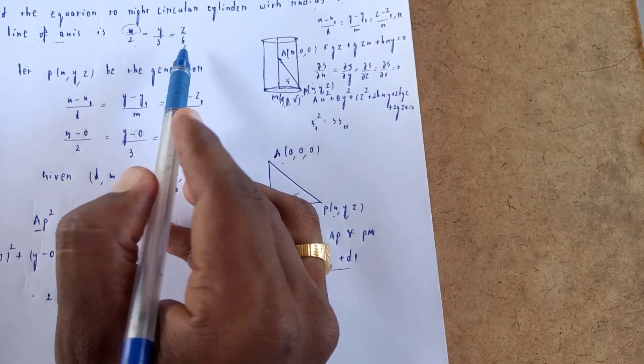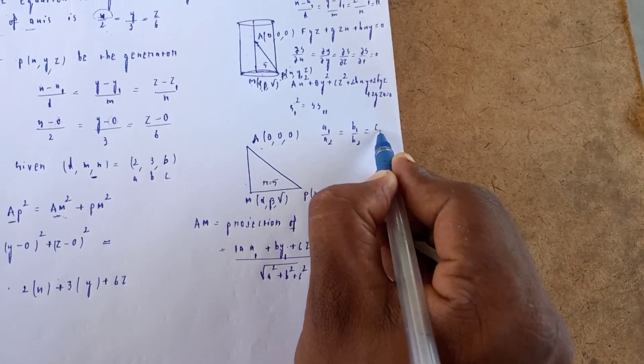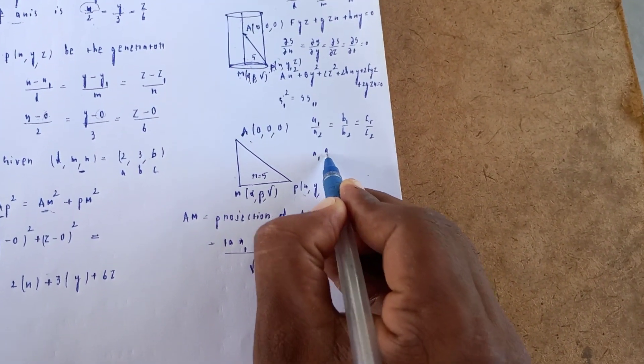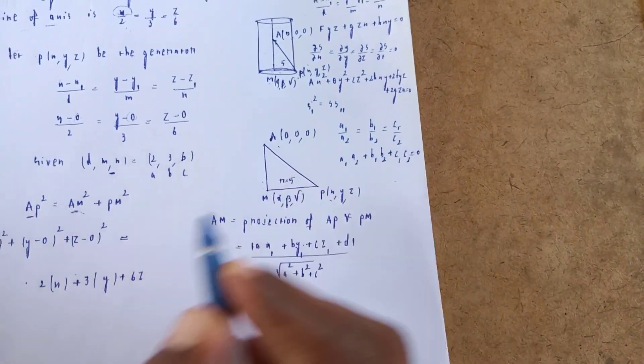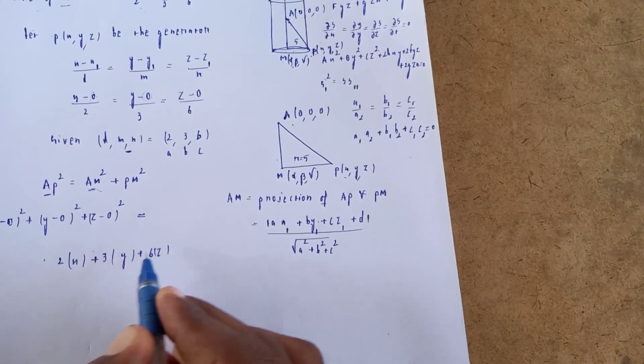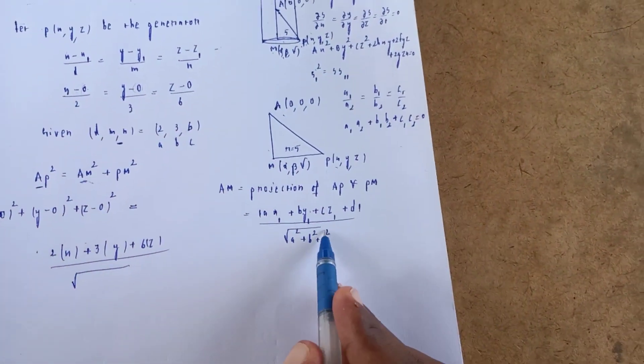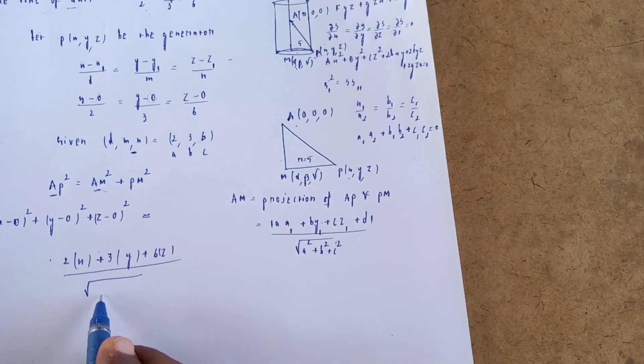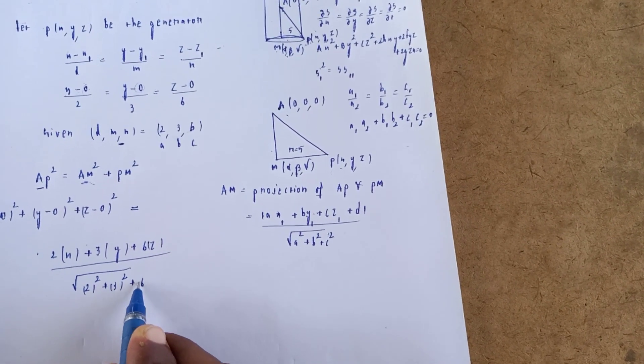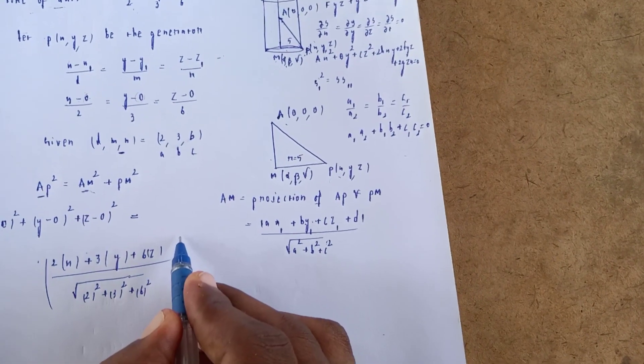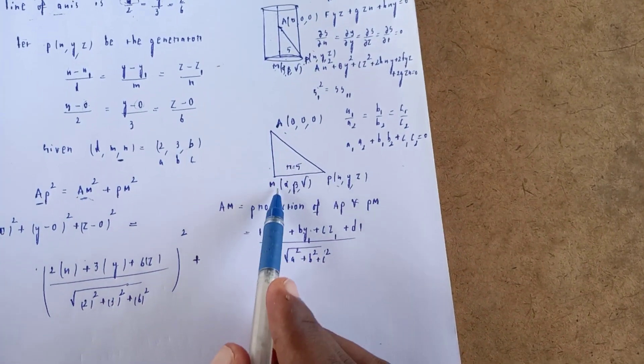For parallel lines a₁/a₂ = b₁/b₂ = c₁/c₂. For perpendicular lines a₁a₂ + b₁b₂ + c₁c₂ = 0. Now AM² = (2x + 3y + 6z)²/(2² + 3² + 6²) and PM = 5.